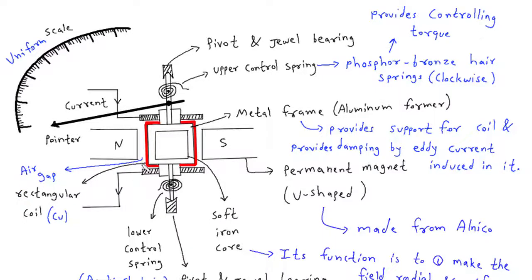Air gap: The air gap is the space between the rectangular coil and the soft iron core. It allows the coil to move freely within the magnetic field generated by the permanent magnet and the soft iron core. The air gap ensures minimal mechanical resistance, allowing the coil to respond quickly to changes in the current being measured.